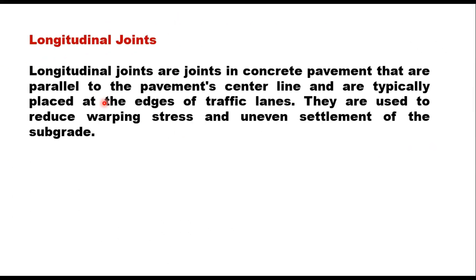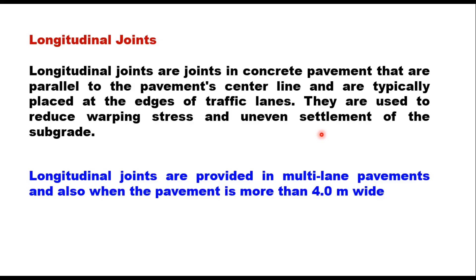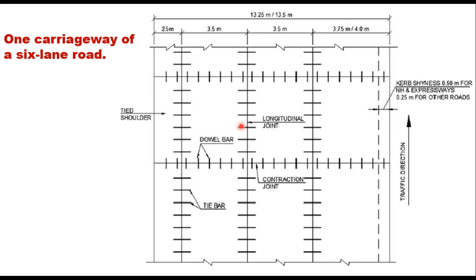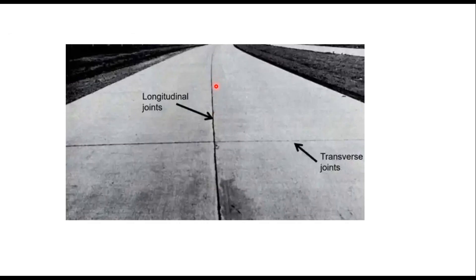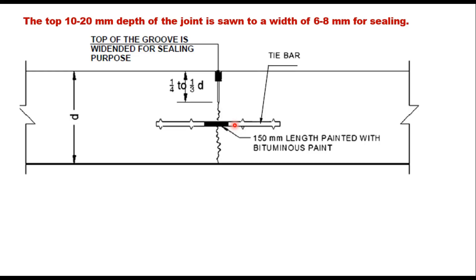The last type is longitudinal joints. Longitudinal joints are joints in concrete pavement that are parallel to the pavement center line and are typically placed at the edges of traffic lanes. They are used to reduce warping stresses and uneven settlement of the subgrade. These joints are provided in multi-lane pavements and also when the pavement is more than 4 meters wide. This is the layout of joints on one carriageway of a six-lane road, showing longitudinal joints running parallel to moving traffic and transverse joints, with tie bars holding the slabs together and dowel bars also visible. These joints also relieve stresses due to warping.